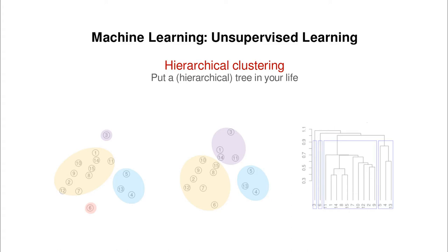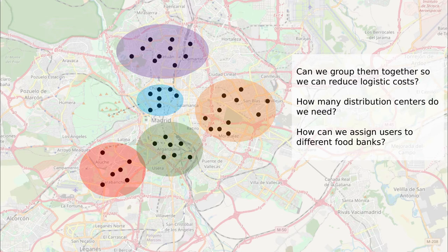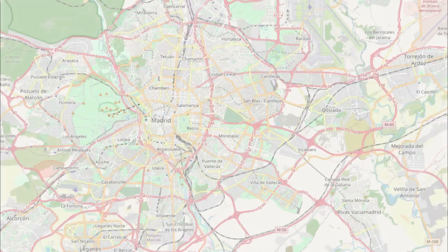Today I want to talk about hierarchical clustering. Last time we decided in advance the number of clusters — in that case maybe the best choice was five — then we assigned different colors to different points according to distance to those initially random clusters, and then we were refining the cluster according to the mean value, or the median. Today we're going to follow a different approach.